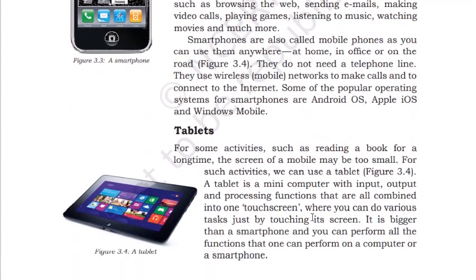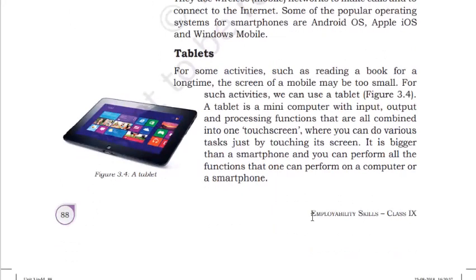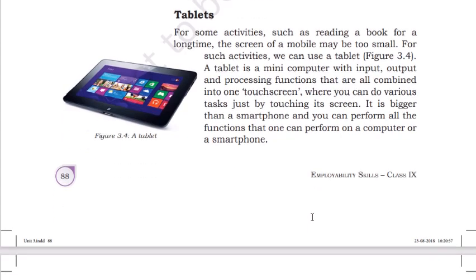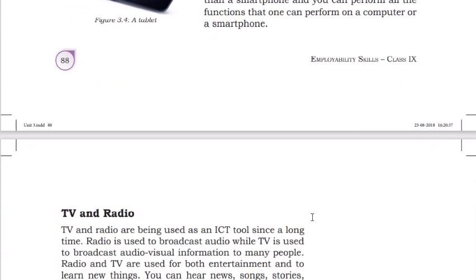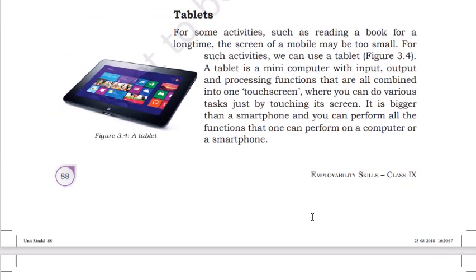Next is the tablet. A tablet is similar to a mobile device but it is the middle device — bigger than a mobile but smaller than a computer. It can do the same things as a mobile and has functionalities of both a mobile and a laptop.